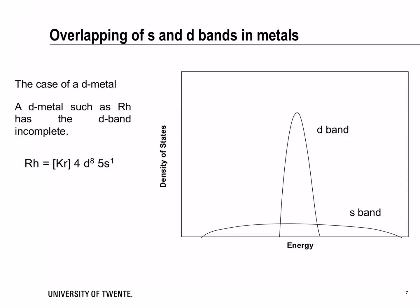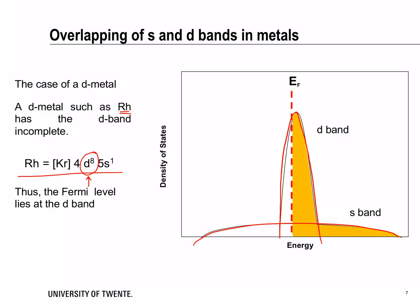Let's look at an example — rhodium. The electronic configuration of rhodium shows that the d-shell is partially filled. When we look at the s and d-bands, we expect the Fermi level to fall somewhere across the d-band such that we have a partially filled d-band and a partially filled s-band.